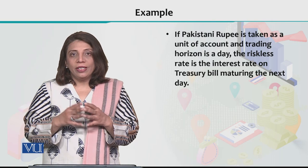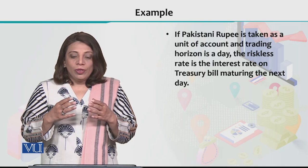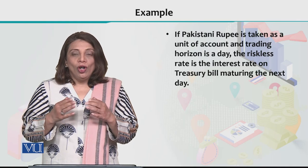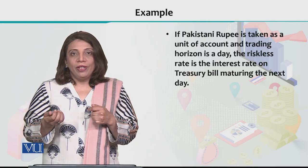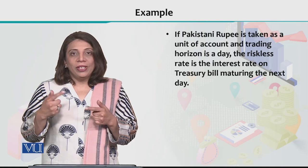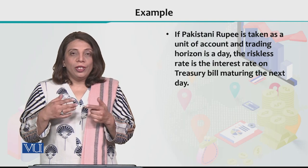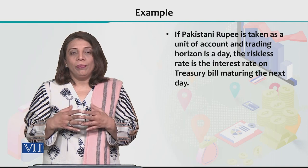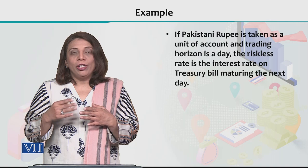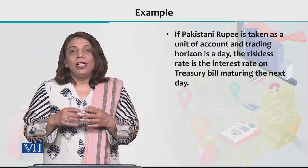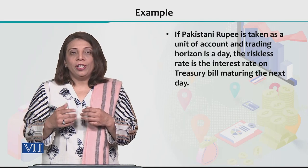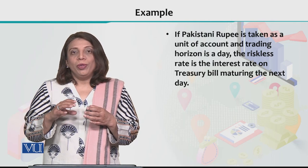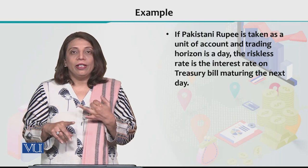For example, suppose we assume the Pakistani rupee is our unit of account — the currency in which we will invest. If your trading horizon is one day, meaning you invest and return it the next day, then the riskless rate in this example will be the interest rate on a T-bill maturing the next day. The unit of account is basically the currency in which you do your business — it can be dollar, yen, Pakistani rupee, or pound sterling.